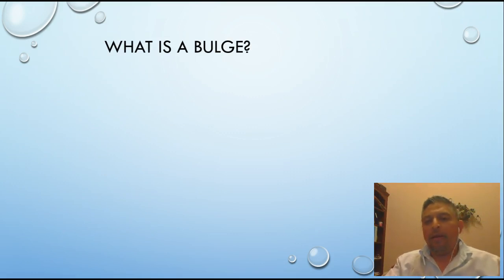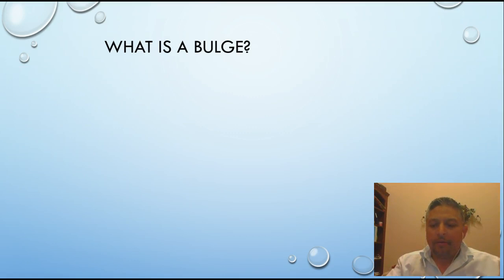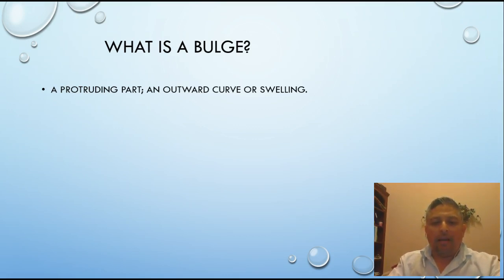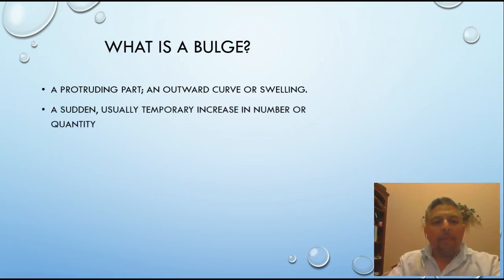What is the bulge? A bulge, according to the dictionary, is a protruding part, an outward curve, or a swelling — kind of like a big belly. It's also a sudden, usually temporary increase in number or quantity, like a huge amount of water coming in and rushing in at the same time.